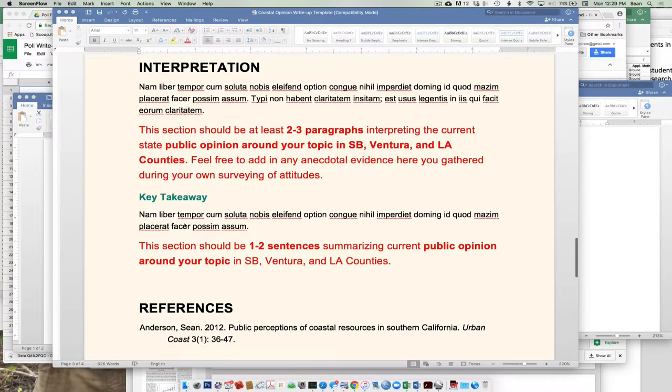And then you guys are just going to boil that down into a one or two sentence takeaway at the very end. So summarize. So in general, people really love oil and gas in the coastal zone. In general, people are very ambivalent, whatever the case may be.